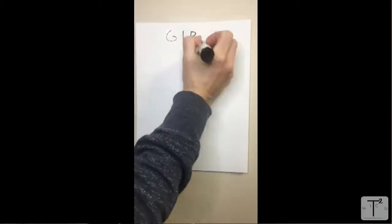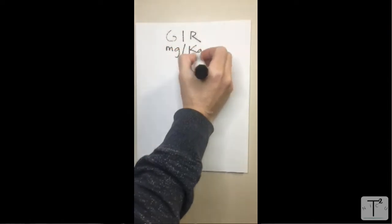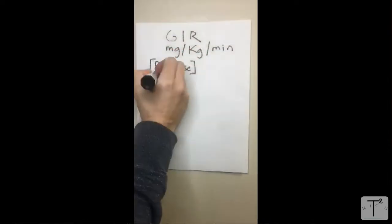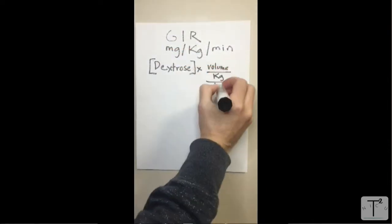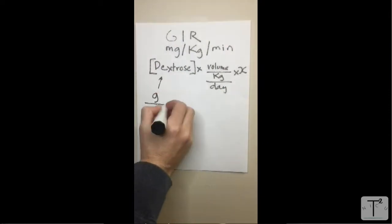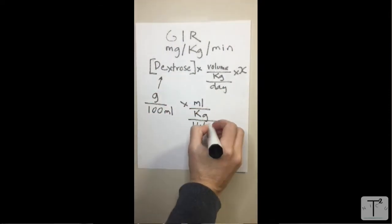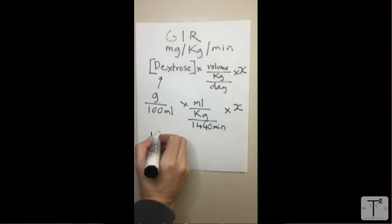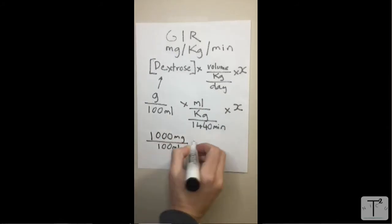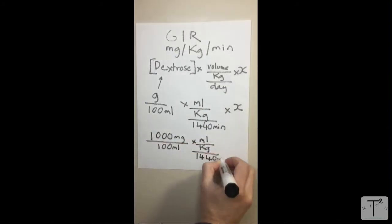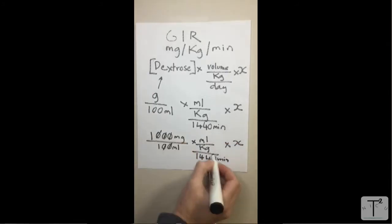So the G.I.R. equals the concentration of the sugar that we're giving, multiplied by the volume that we're giving, divided by 1,440. If you work out all the units, the G.I.R. equals the concentration of the sugar — so D10 or D20 — multiplied by the volume in milliliters per kilo per day, divided by 144.